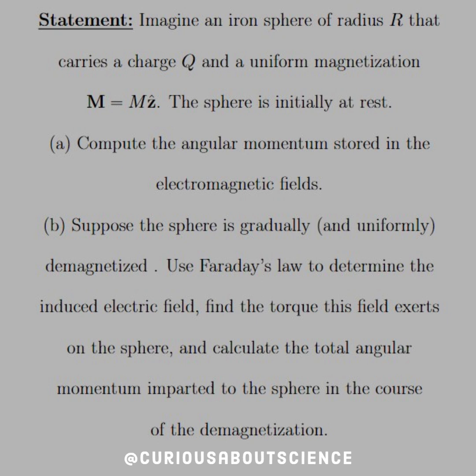Let's start with the statement. Imagine an iron sphere of radius big R that carries a charge big Q and a uniform magnetization. We haven't seen that in a little while. Big M equals M in the z-hat direction. The sphere is initially at rest. All of these things need to be taken into account for initial conditions on the intervals.